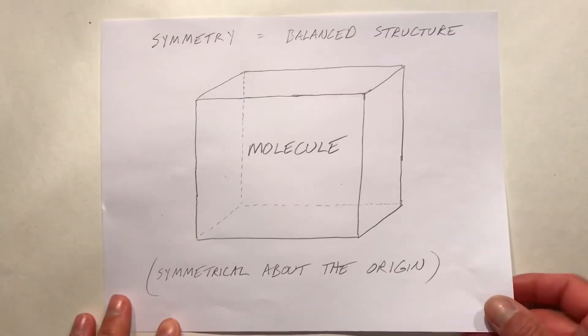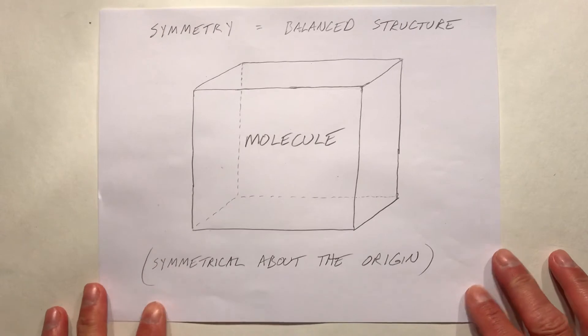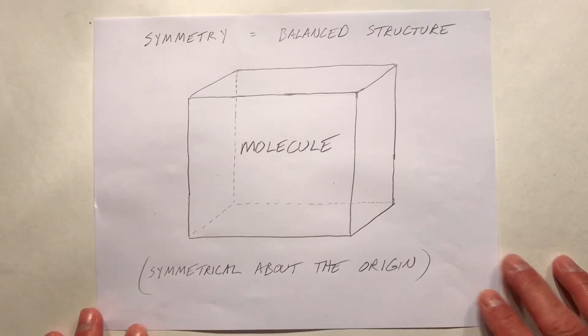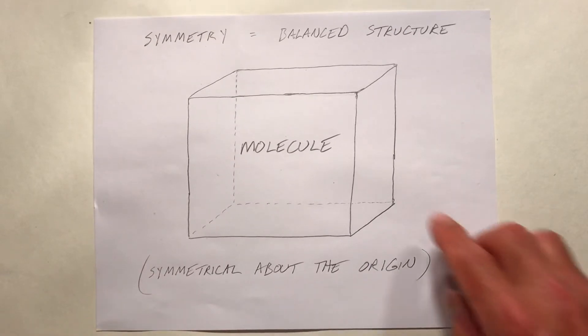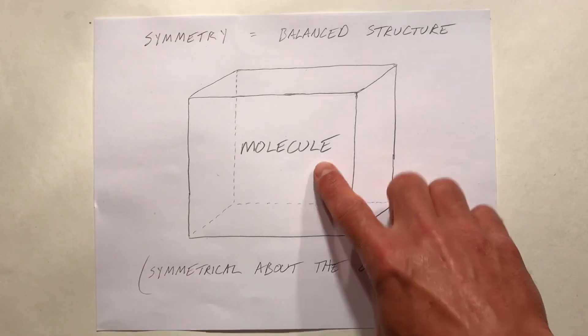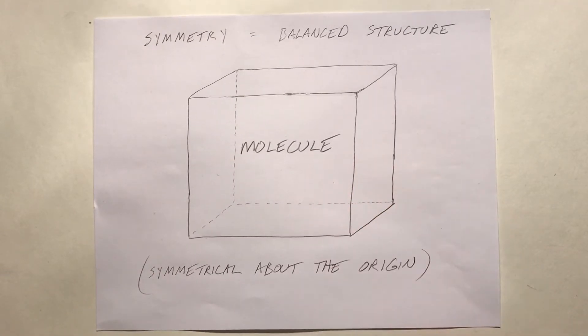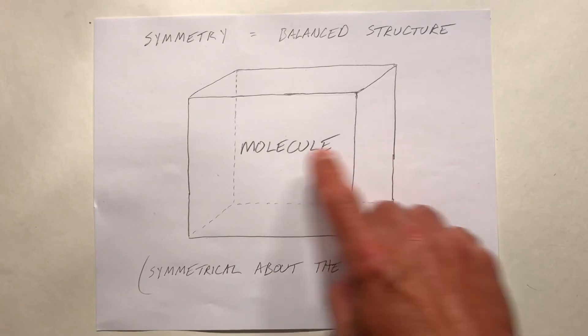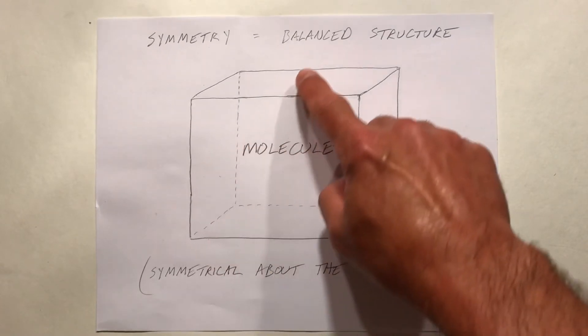So what does it mean to have symmetry? We don't have to get too complex about it. Let's say we have a three-dimensional molecular structure and we build an imaginary cube around it.